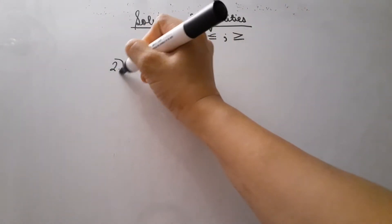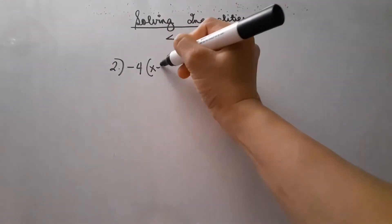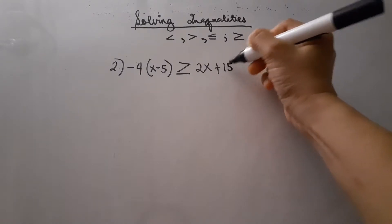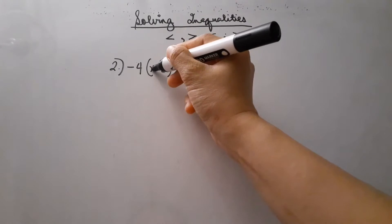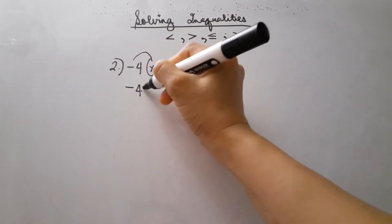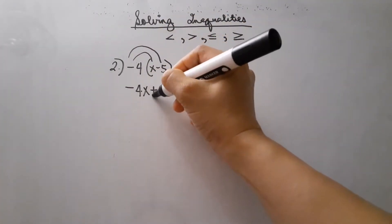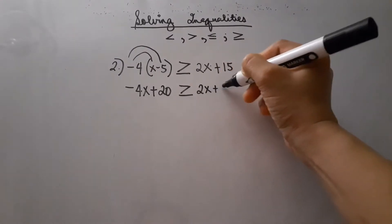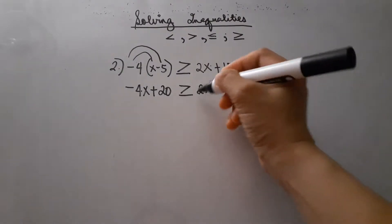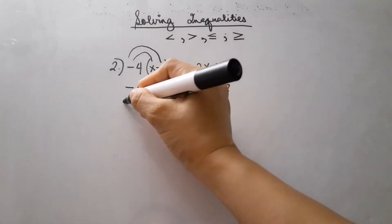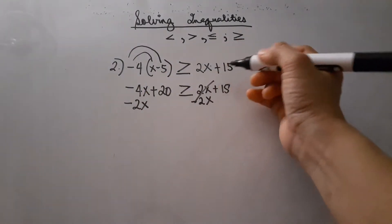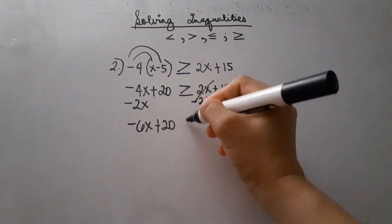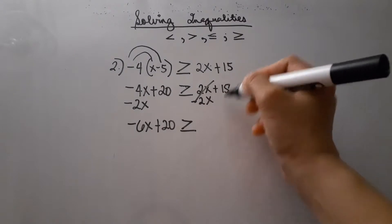Let's have example number 2, which is negative 4 times the quantity of x minus 5, greater than or equal to 2x plus 15. We use the distributive property: negative 4 times x is negative 4x, and negative 4 times negative 5 is positive 20, giving us negative 4x plus 20 greater than or equal to 2x plus 15. Then we subtract 2x from both sides, leaving negative 6x plus 20 greater than or equal to 15.